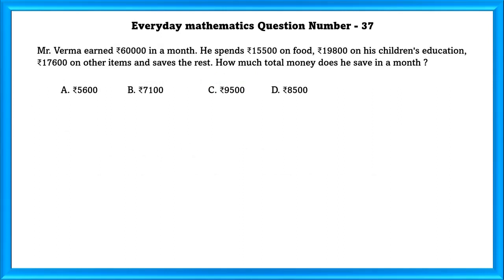Everyday Mathematics question number 37. Mr. Verma earned 60,000 in a month. He spends 15,500 on food, 19,800 on children's education, 17,600 on other items and saves the rest. How much total money does he save in a month?